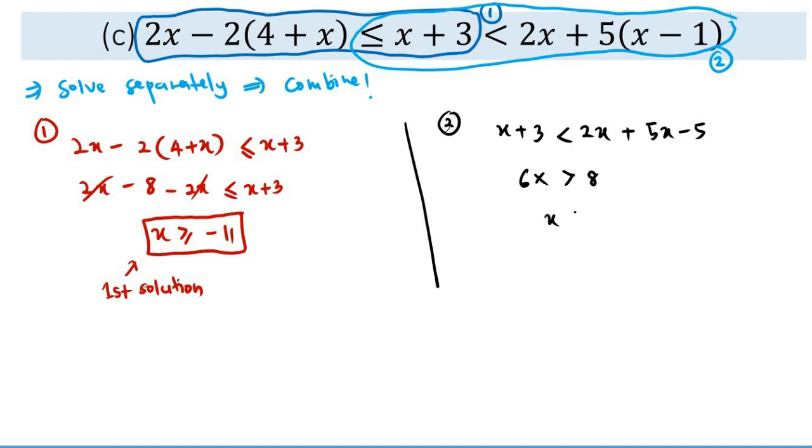Careful! This one is greater. Negative 5 has been moved to our left here, so that is 8 already. So x greater than 8 over 6 can be simplified any further. That should be 4 over 3. This is our second solution.